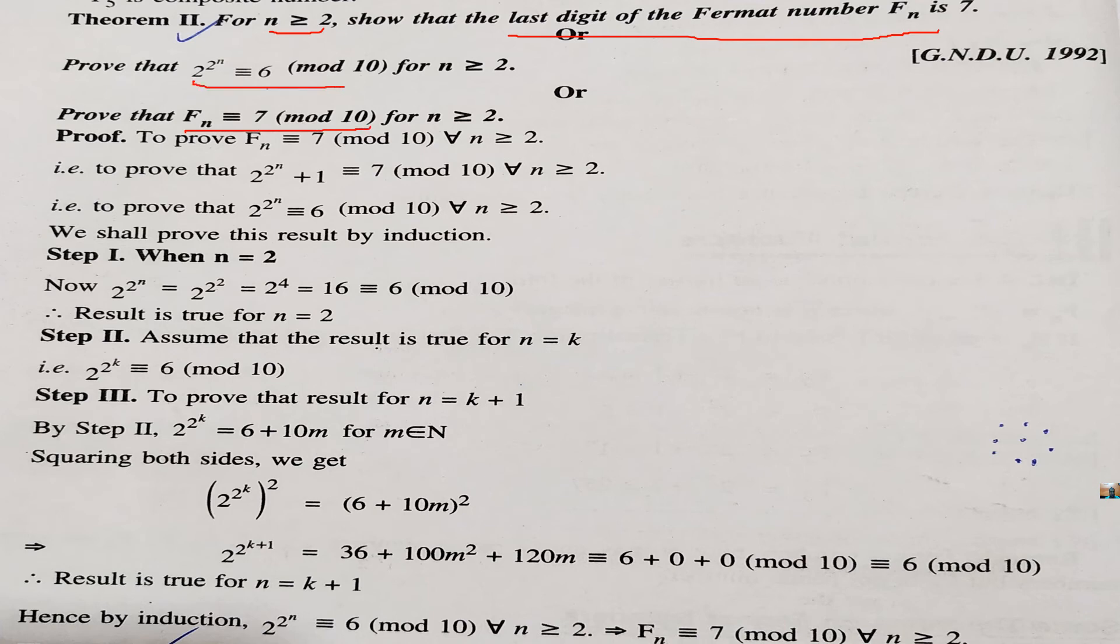Now, we have to prove this thing. We know that this is a Fermat number 2 raised to power 2 raised to power n plus 1. If we take subtract 1 from both sides, we can also modify the result like this. We have to prove this result. We prove this result by using n is equal to 2. We will use method mathematical induction.